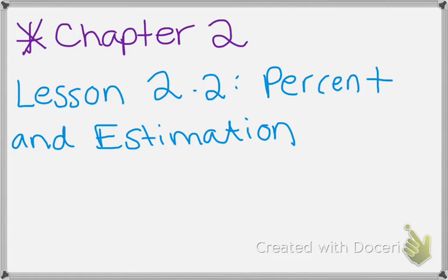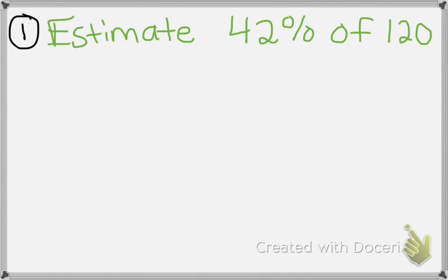Okay, so now we're on Chapter 2, Lesson 2.2, which is Percent and Estimation. So what we're doing here is basically the same as 2.1, which is on the percent of a number. But in this case, they want us to estimate, because when you use percent, you don't always have to have an exact answer. You can always approximate to something.